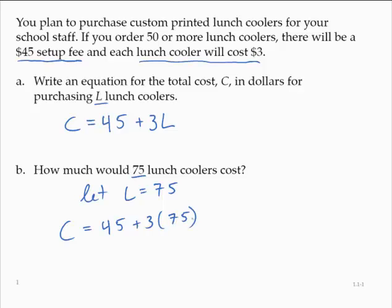It's always a good practice when making a substitution to put that substitution in parentheses. Following the order of operations, we would have cost is equal to 45 plus, multiplying 3 times 75 yields 225, and so then the cost would be 270. And let's remember some units here.